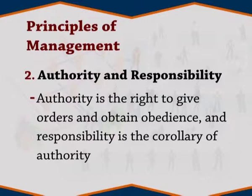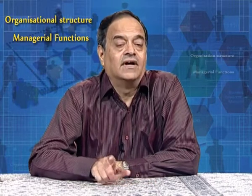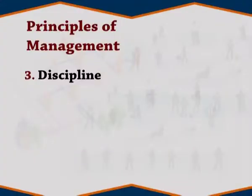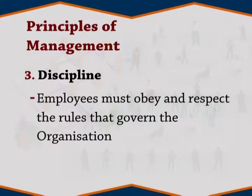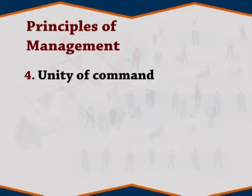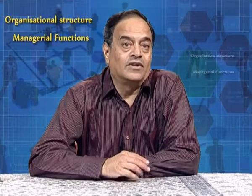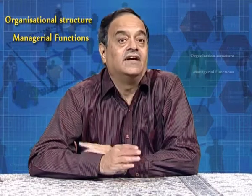Two: authority and responsibility. Authority is the right to give orders and obtain obedience, and responsibility is the corollary of authority. If a manager has responsibility of a particular activity, then he should be given authority also to control the activity. Three: discipline. Employees must obey and respect the rules that govern the organization. Good discipline is the result of effective leadership. This is absolutely necessary. Four: unity of command. Every employee should receive orders from only one superior. If more than one boss gives instruction, then it will result in chaos.